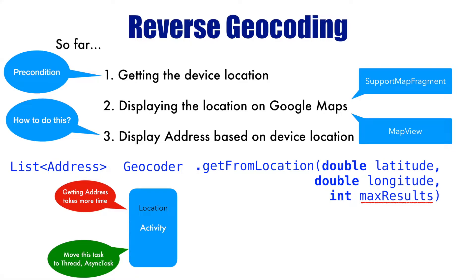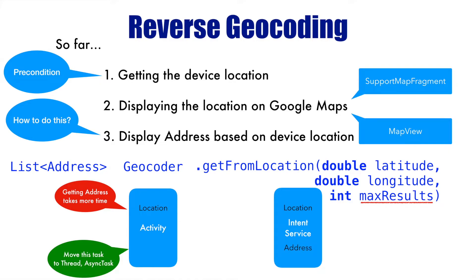But in the demo I will be showing you, I won't be using a thread or async task. I will use an Intent Service. From the activity, whatever location we have got, we will send that to the Intent Service. The Intent Service will call getFromLocation, fetch the address, and return it back to the activity to display.